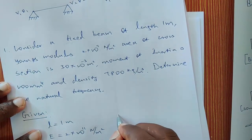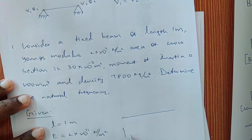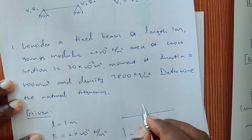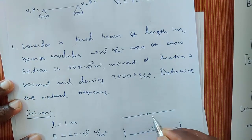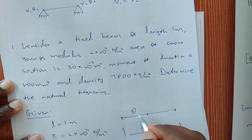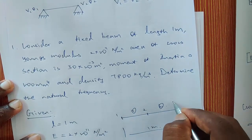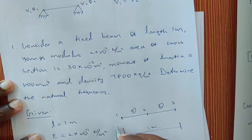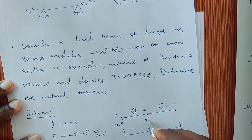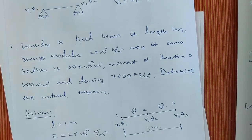We will construct a drawing. This is our given element of total length 1 meter. I am going to split this 1 meter into 2 regular elements. This is element number 1 and this is element number 2. The node numbers are 1, 2, and 3. At node 1 the degrees of freedom are V1 and θ1; at node 2 it is V2 and θ2; at node 3 it is V3 and θ3.